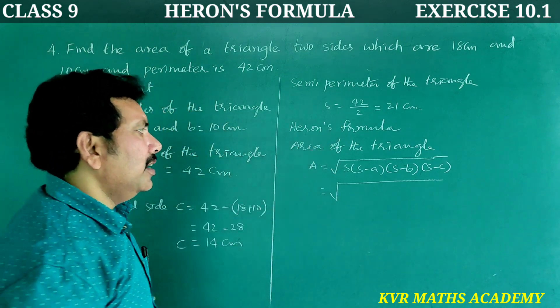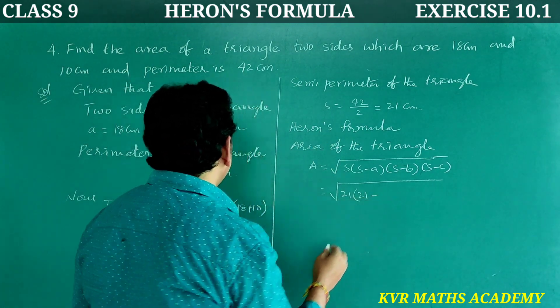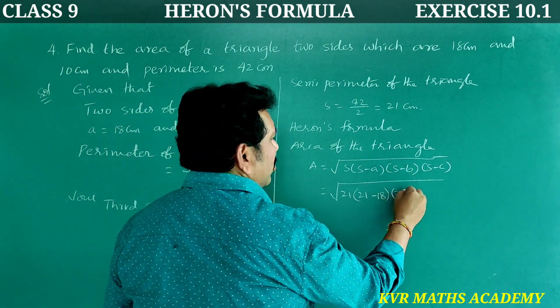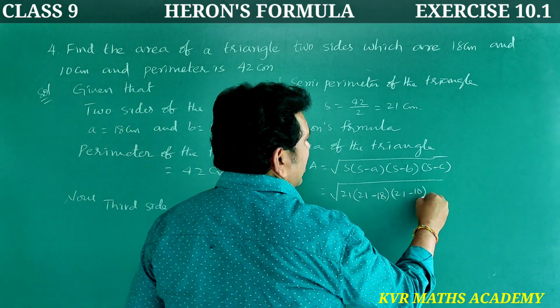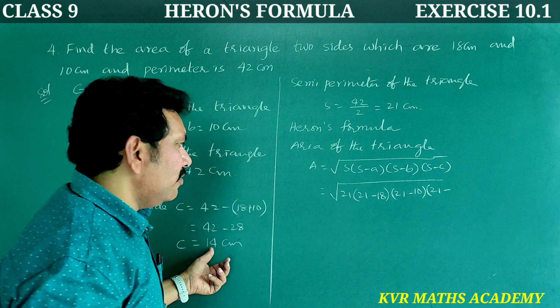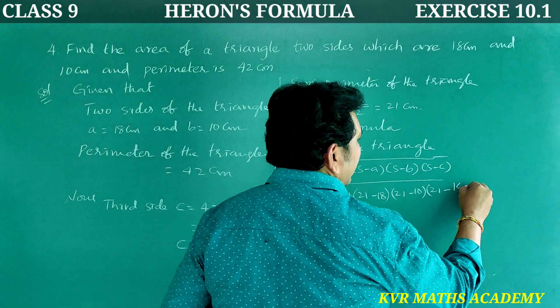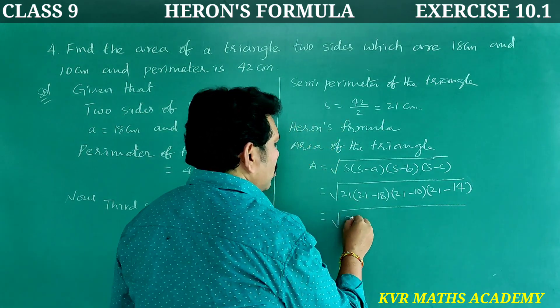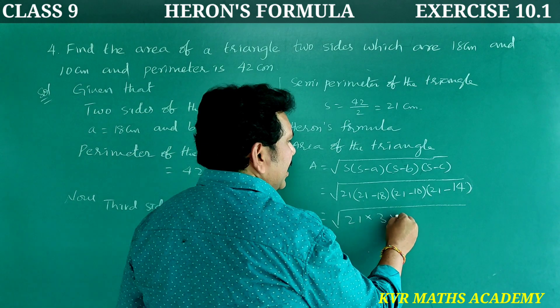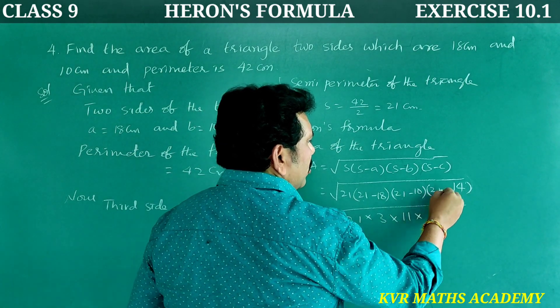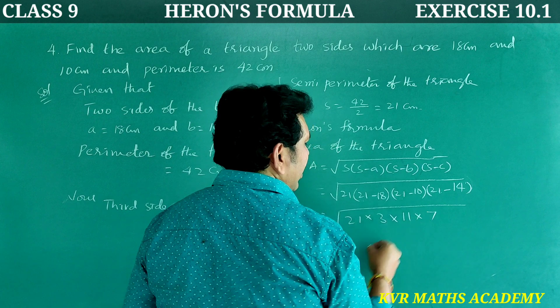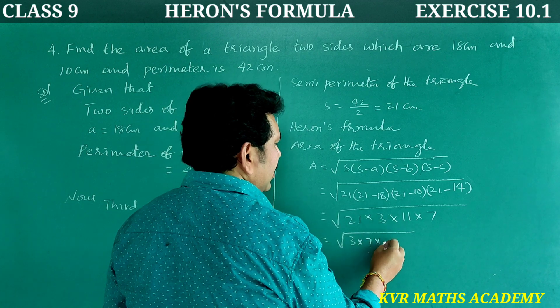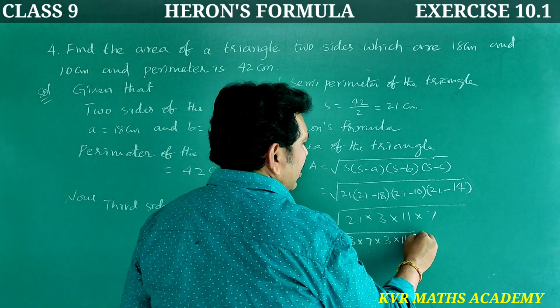So that is root of 21 into 21 minus 18 is 3, into 21 minus 10 is 11, into 21 minus 14 is 7. Right. How can you write this one? 21, 3 times 7 is 21, into 3 into 11 into 7.